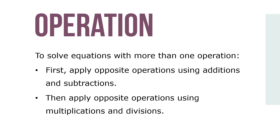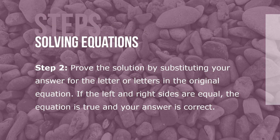To solve equations with more than one operation, first apply opposite operations using additions and subtractions, then apply opposite operations using multiplication and division. Step two: prove the solution by substituting your answer for the letter or letters in the original equation. If the left and right sides are equal, the equation is true and your answer is correct.